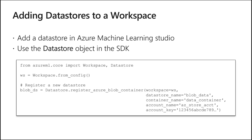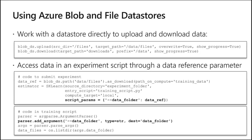To upload files to a data store, you can call `blob_data_ds.upload()`, specifying the source directory (e.g., `/files`) and target path (e.g., `/data/files`). Setting `overwrite=True` means an existing file will be replaced. A progress indicator shows the upload percentage — 0%, 10%, 20% — which is helpful for large files.